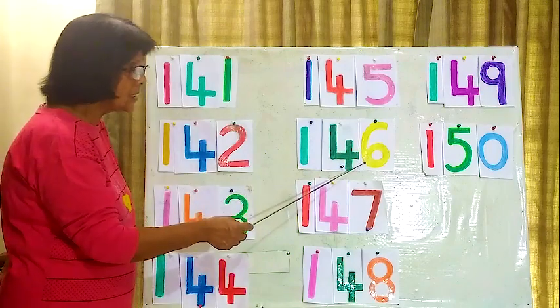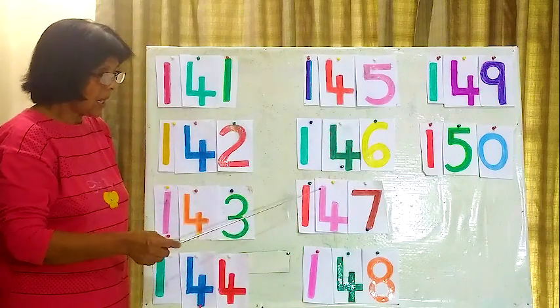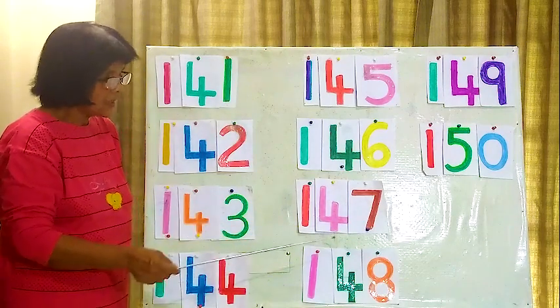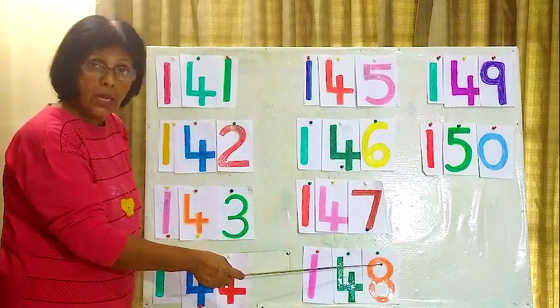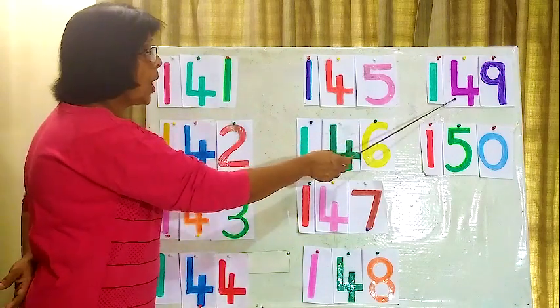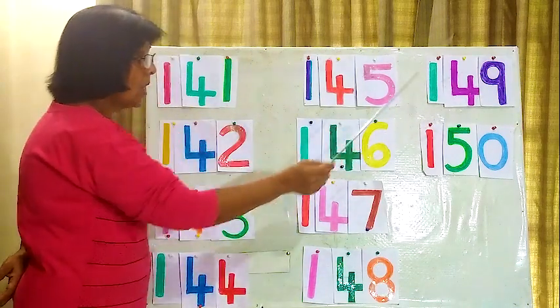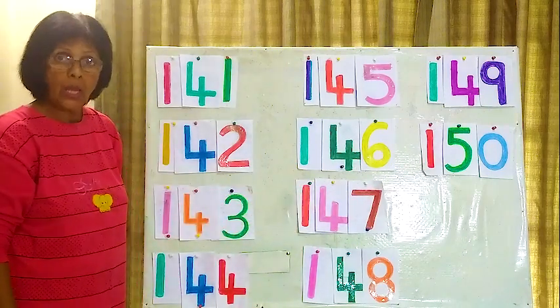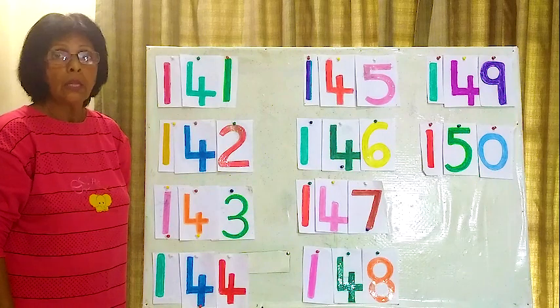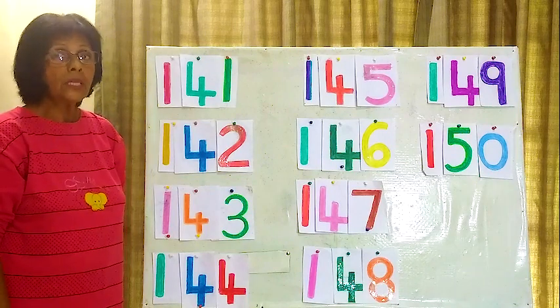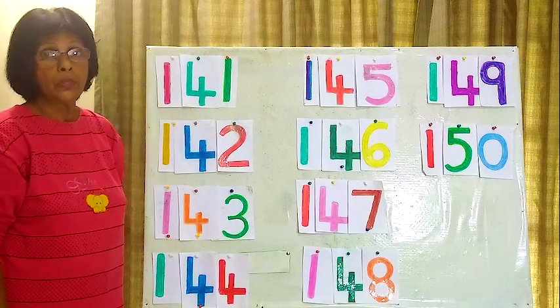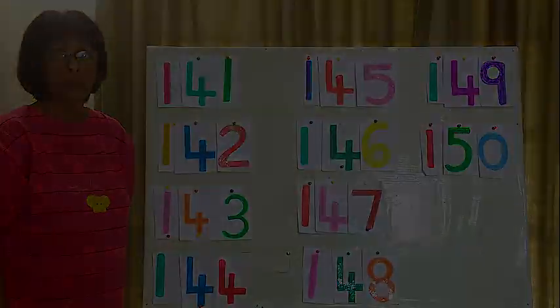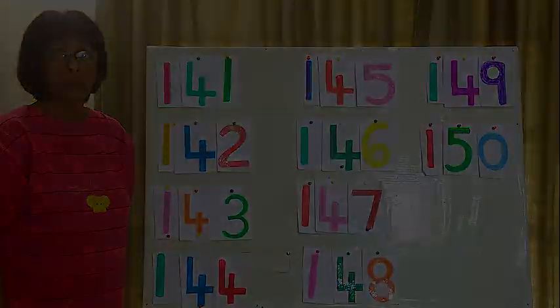Now here 145, 146, 147, 148. Or you can read like this: 145, 146, 147, 148.